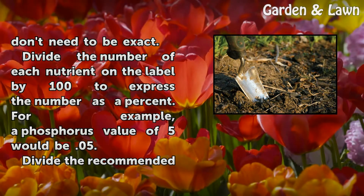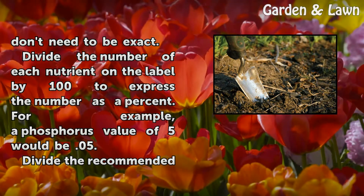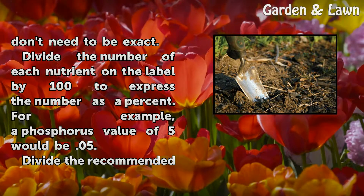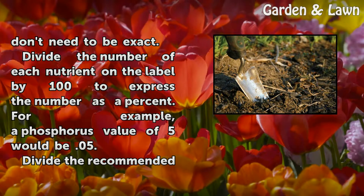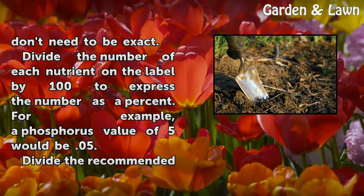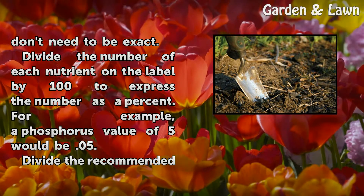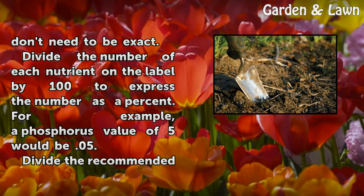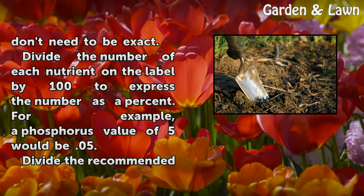Divide the number of each nutrient on the label by 100 to express the number as a percent. For example, a phosphorus value of 5 would be 0.05.